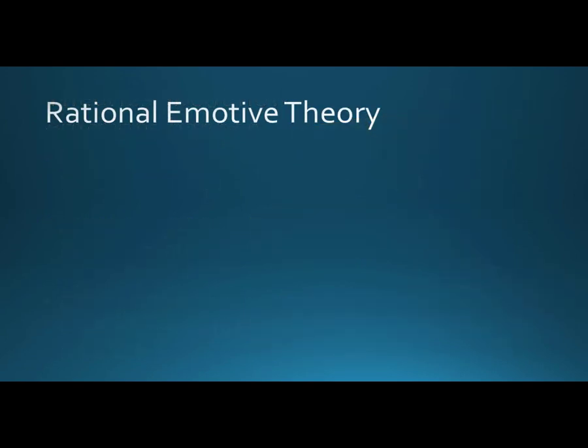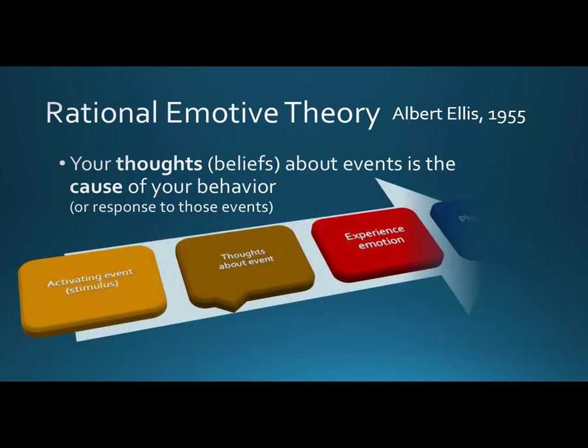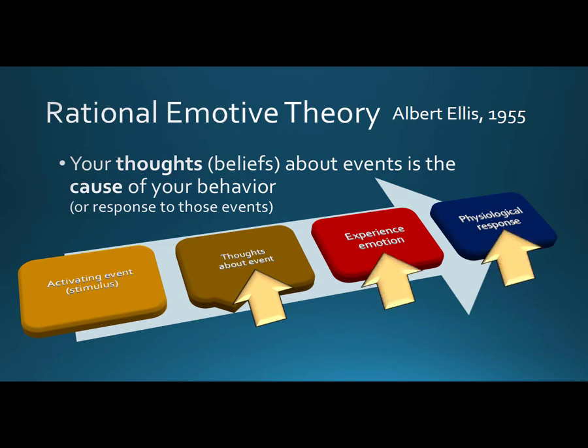That brings us to another theory—the rational emotive theory—as proposed by psychologist Albert Ellis in 1955. It's very similar to the appraisal label approach. Instead of saying that an event causes your emotions, Ellis says that how you think about those events is what causes your emotions. Your thinking causes your emotions, not what someone says to you or how they behave around you. He still starts with a stimulus, or what he calls the activating event. Then your thoughts about that event create your emotional response, which results in your physiological response.